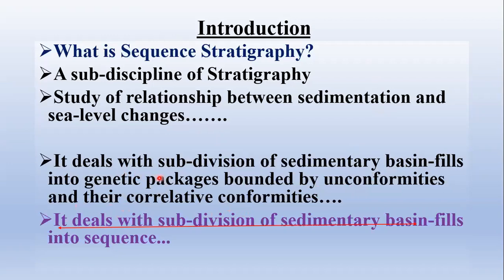This definition not only defines sequence stratigraphy but also describes its scope. In sequence stratigraphy, we subdivide the sedimentary basin field into genetic packages bounded by unconformity and their correlative conformity. Sedimentary deposits are divided into discrete genetic packages, and such packages are bounded by unconformities and their correlative conformity. Any stratigraphic unit or genetic package of conformable strata which has an unconformity and its correlative conformity at its top as well as at its base is termed as a sequence.